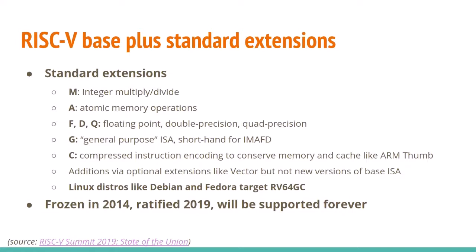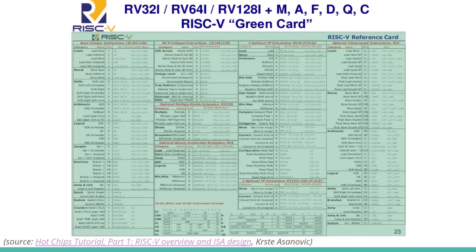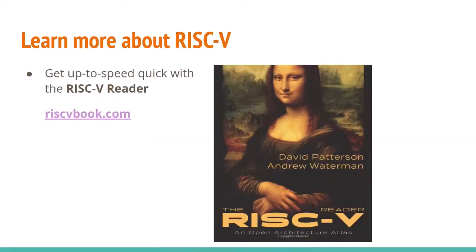The base and standard extensions were frozen in 2014 and ratified in 2019. So if you compile a program now for RV64GC, in 20 years on some fancy RISC-V processor, it'll still be able to run. All the instructions for the base ISA and standard extensions fit on one card — much smaller than x86 or ARMv8. If you want to go deeper, I recommend the RISC-V Reader — it's about 100 pages, gets you up to speed quickly, and is available in several languages.